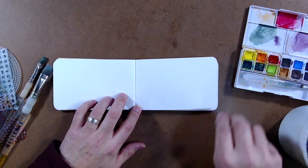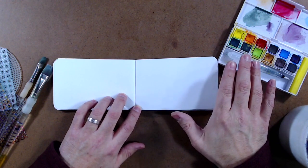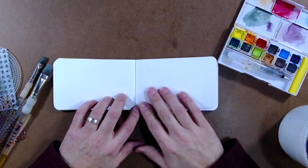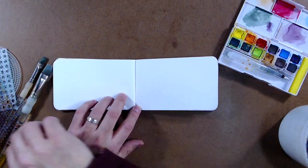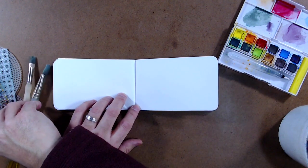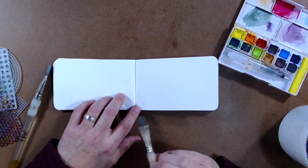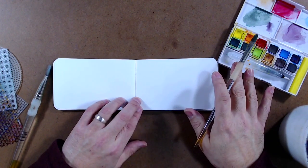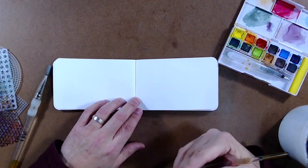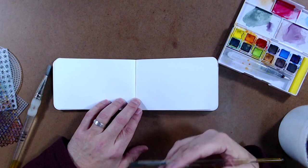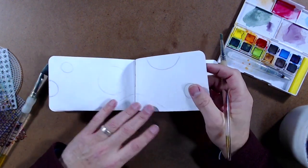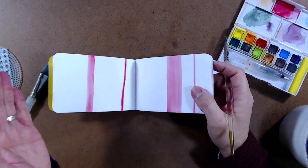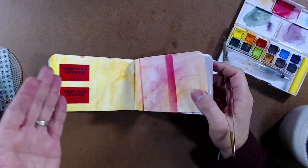I'm using the inktense paints by Derwent. This goes along with their line of inktense pencils as well as their inktense blocks. It's a really interesting paint to use because once it dries it's more permanent, it doesn't really lift up like watercolor might.